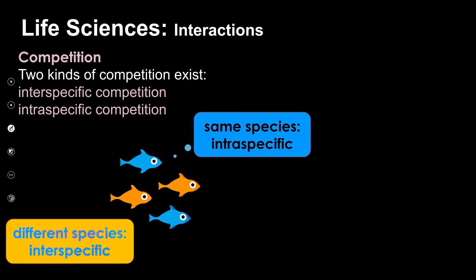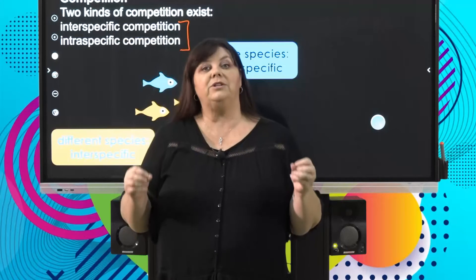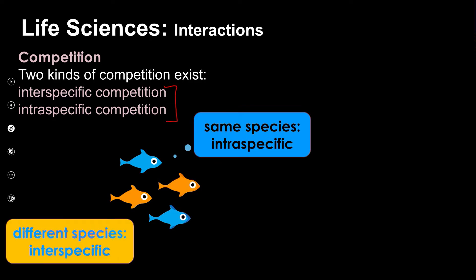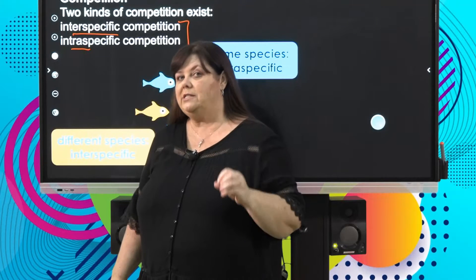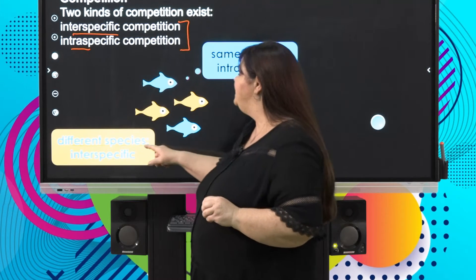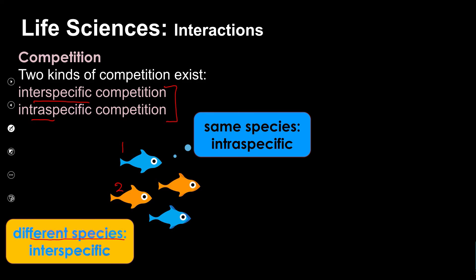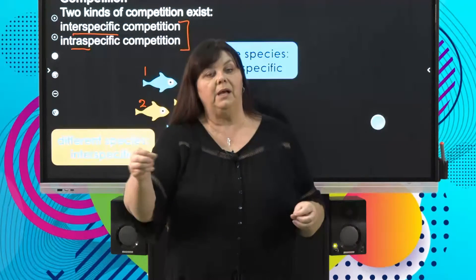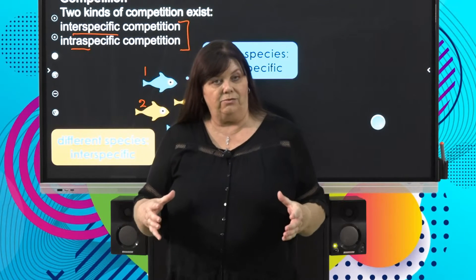There are two different kinds of competition, and we need to distinguish between them — the terms sound very similar. They are inter-specific competition and intra-specific competition. When we talk about inter-specific competition, we're talking about different species — two different species competing for the same resource. If you think about a waterhole in a game park, water is the contested resource and it's different species competing for the same body of water.